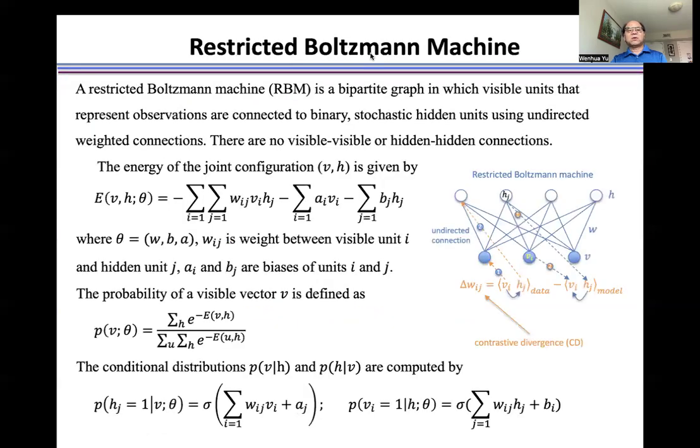A restricted Boltzmann machine is a bipartite graph in which visible units that represent observations are connected to binary stochastic hidden units using undirected weighted connections.